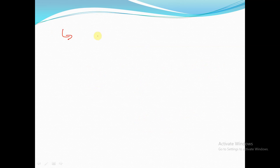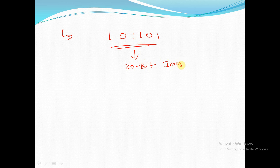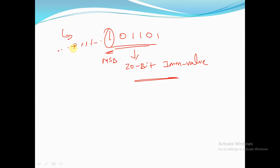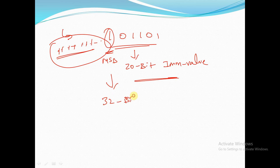For example, if we have a 20-bit immediate value like 1, 0, 1, 1, 0, 1... how do we convert it into a sign-extended 32-bit value? We replicate the MSB — this is our MSB — for the next 12 bits. We fill all the remaining bits with the MSB value, so it becomes 32 bits.